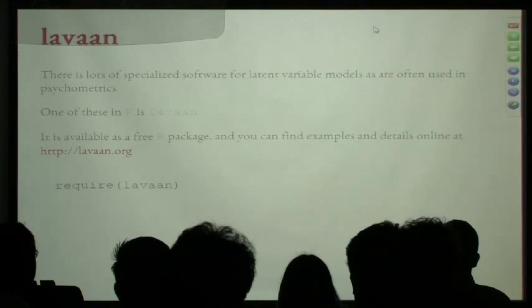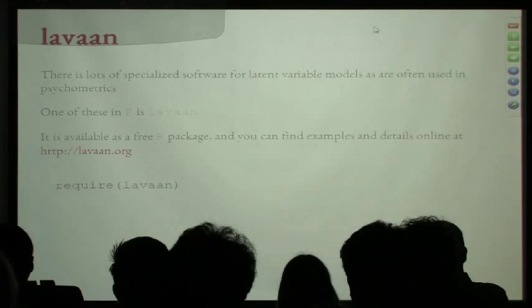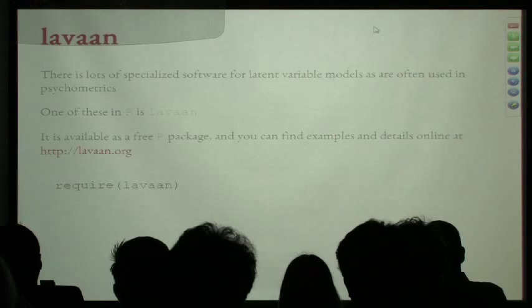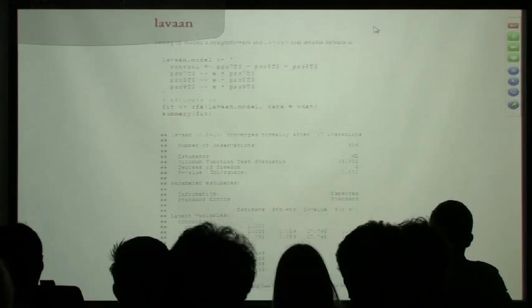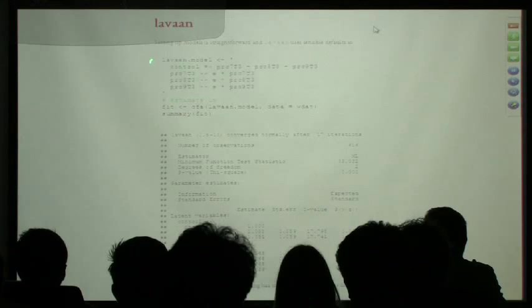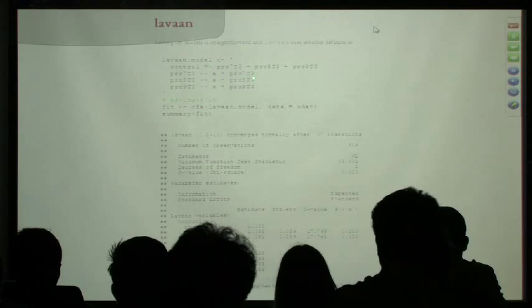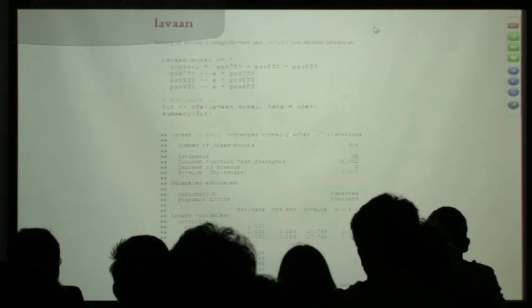Plotting predicted factor scores from lavaan against the extracted random effects from lmer gives essentially the same estimates — there's a little wiggle but it's trivial. You can get basically the same model in either framework. But as we saw in Stan, it's much easier to extend factor models than mixed effects models to include predictors. I add a second factor — the threat factor — with its three indicators plus one cross-loading item, and estimate that in lavaan.